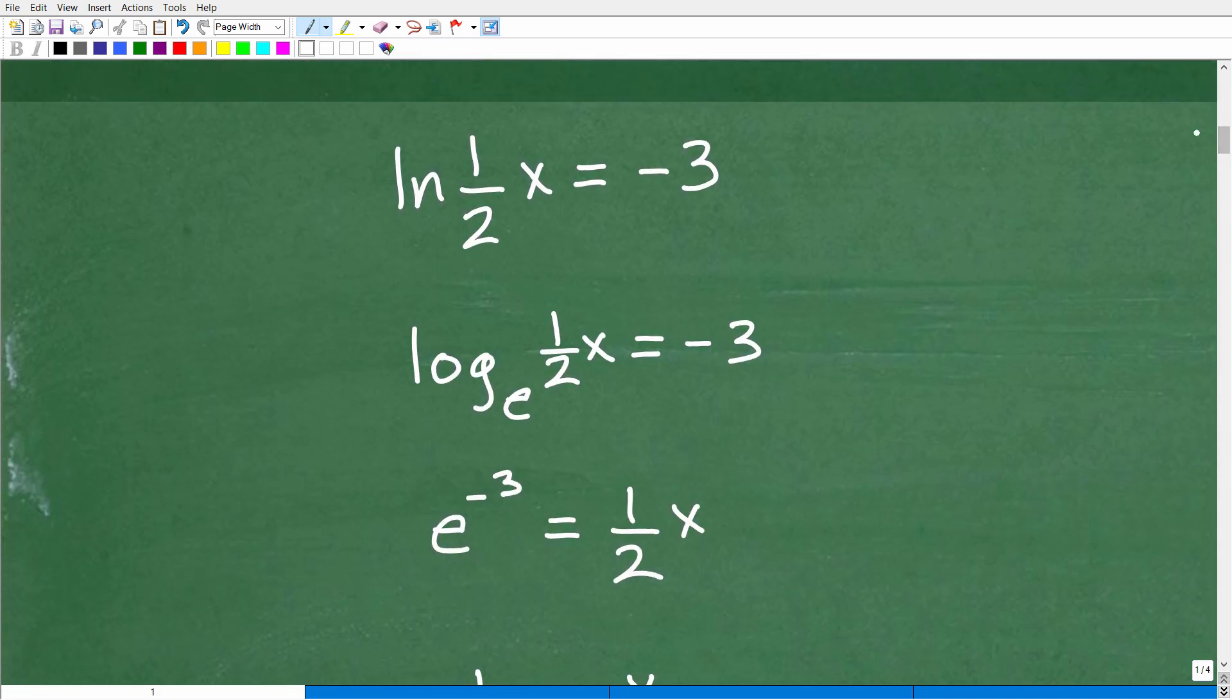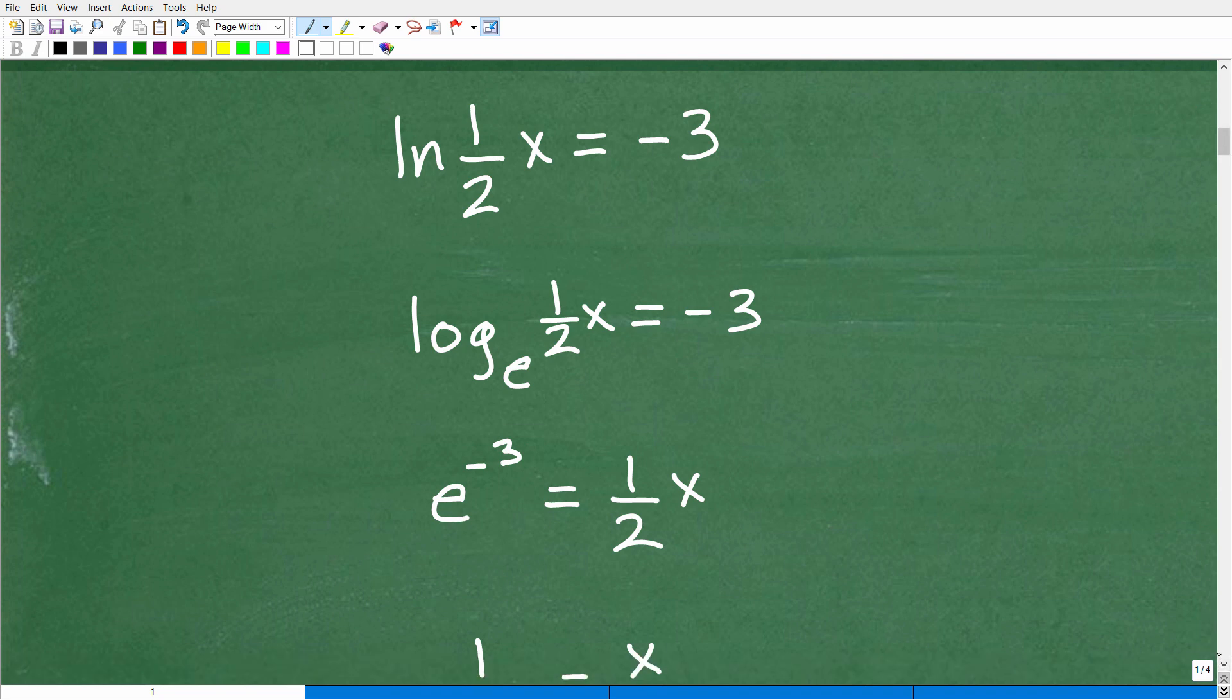All right, so here we go. So we got ln, one half x is equal to negative 3. So I kind of pre-wrote this work just to make this a little bit smoother. But ln, this is the natural log. So just remember ln means log base e. Okay, now e is the natural base. It's 2.718, et cetera. It's a number. So I want you to kind of think of ln temporarily. We'll just write it this way, log base e. We don't write log base e typically. We'll just write ln. But we're going to write log base e here because remember,